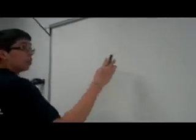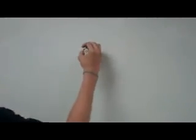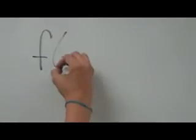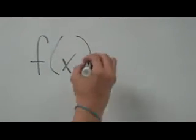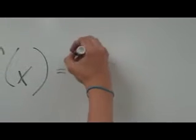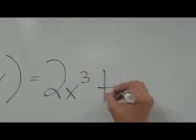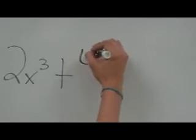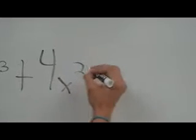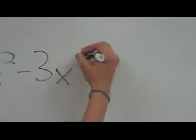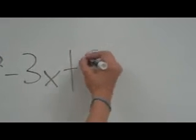Alright, so we're gonna start off — I'm gonna write a random equation over here. So we're gonna start off with F. If we want to find that equation, F of x equals — let's think of an equation — 2x cubed, plus 4x squared, minus 3x, plus let's say 9.